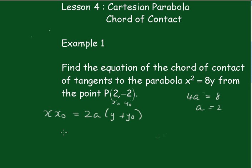Now we replace that, we'll have 2x equals 4 into y minus 2, so we have that x equals 2y minus 4, so general form that becomes x minus 2y plus 4 equals 0 is the equation of the chord of contact.